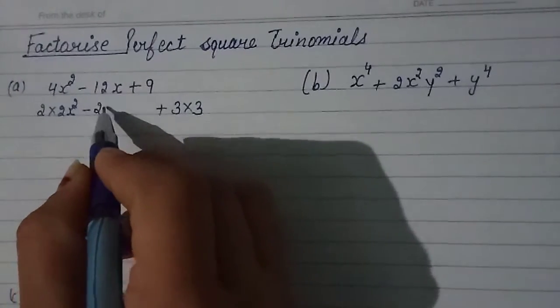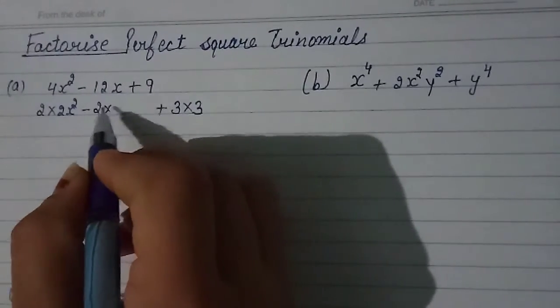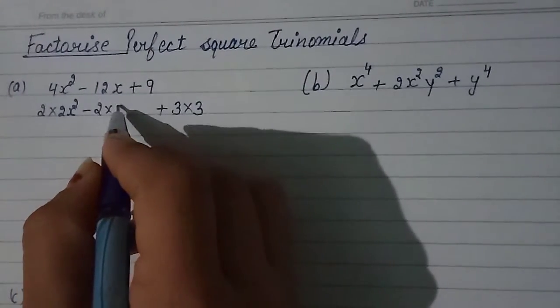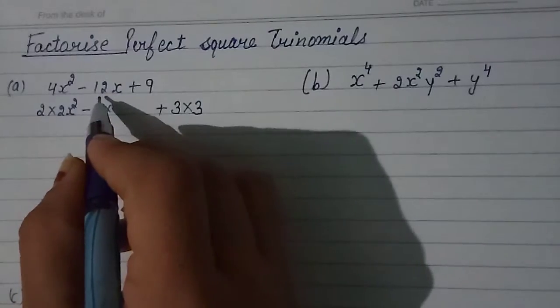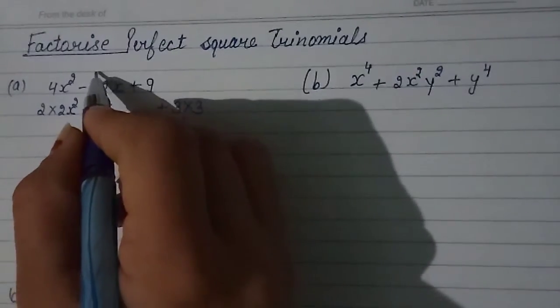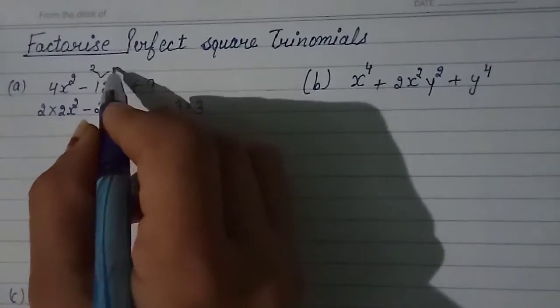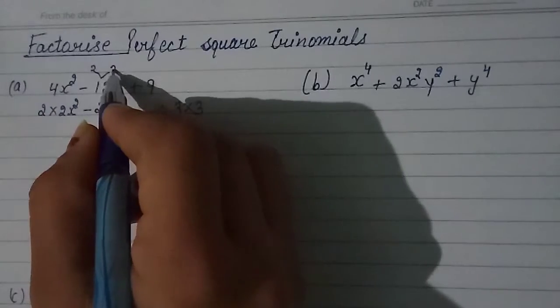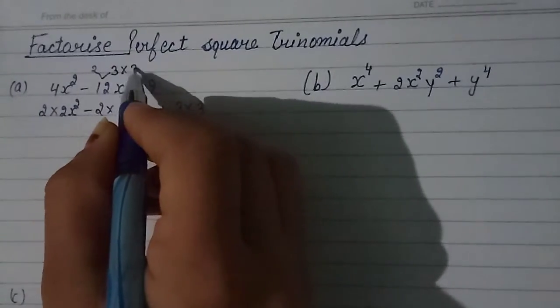It means 2 times 3 is 6, or if you do it like 2 into 2 times 3 is 6, times 2 is 12.